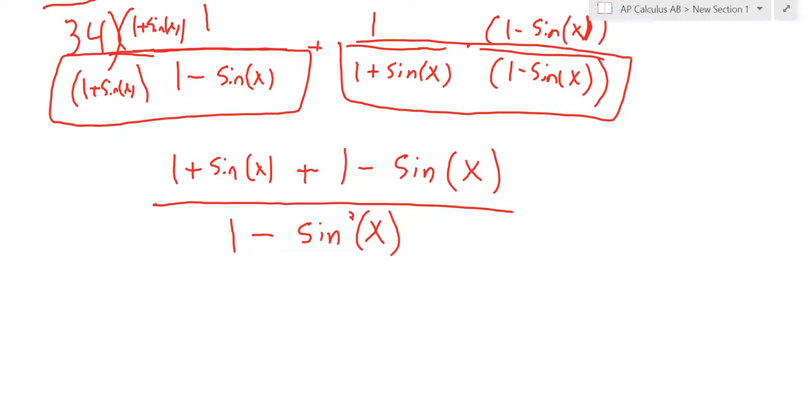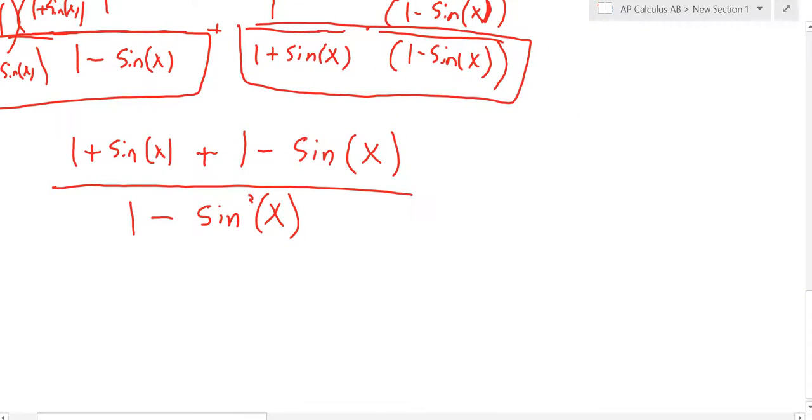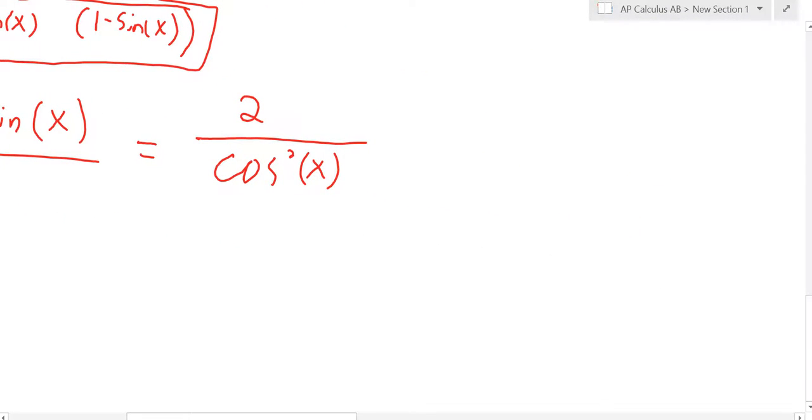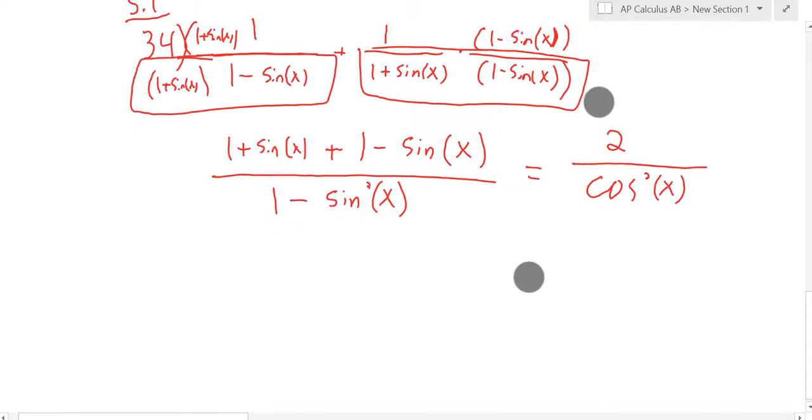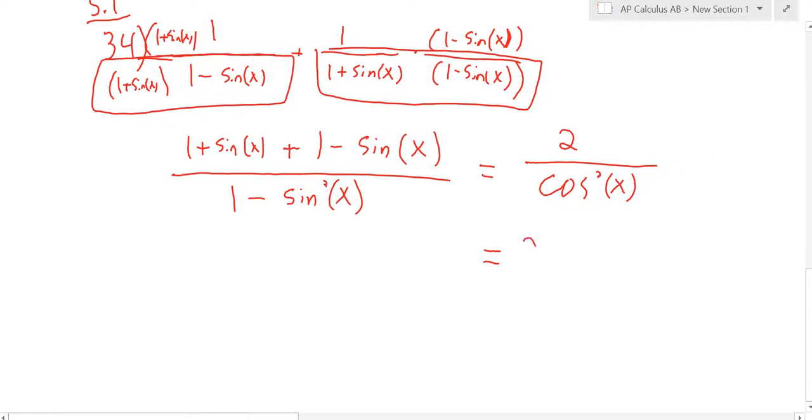2. And the bottom is cosine squared. And that's kind of okay to leave it just like that. But we said 1 over cosine is secant. So this really becomes 2 secant squared of x. Simple enough?